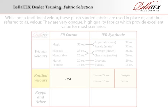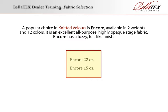A popular choice in knitted velours is Encore, available in 2 weights and 12 colors. It is an excellent, all-purpose, highly opaque stage fabric with a fuzzy, felt-like finish. The heavier the weight, the more expensive the fabric will be. Encore 22, though less expensive than a woven synthetic of the same weight, costs more than the lighter weight Encore 15.